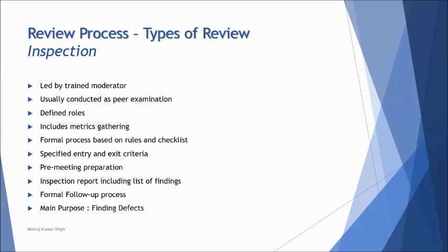The last type is inspection, which is the most formal review among all the types. If you know the formal review process, you know what inspection is. Everything happens as per the formal review process — the stage-wise process with five stages, plus different roles and responsibilities distributed among the people.